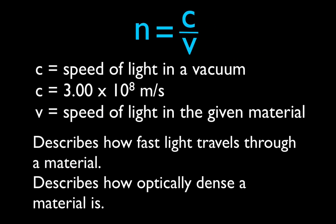The definition of the index of refraction — which is basically the same as the equation — is simply N, where N stands for the index of refraction, is equal to C divided by V. C is the speed of light in a vacuum, which is a constant: 3.0 times 10 to the eighth meters per second. We divide that by the speed of light in the material for which we're trying to calculate the index of refraction. So it's just the ratio of the speed of light in a vacuum to the speed of light through that material.